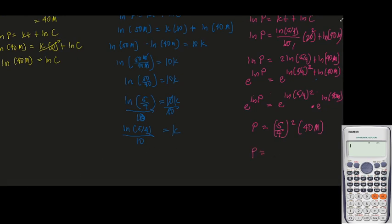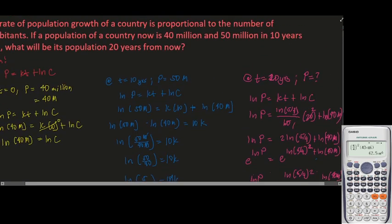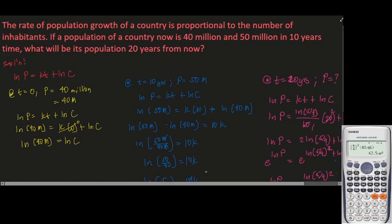Computing the final answer: (5/4) squared times 40 million. That is (25/16) times 40 million, which equals 62.5 million, or 62 million five hundred thousand. So 62.5 million is our answer for this problem. I hope you understood something in this video, and as always, enjoy learning.